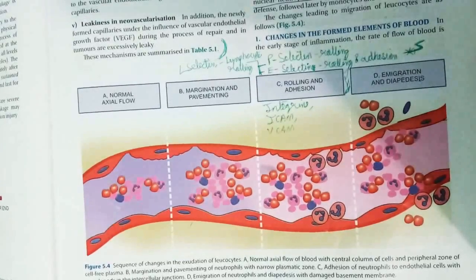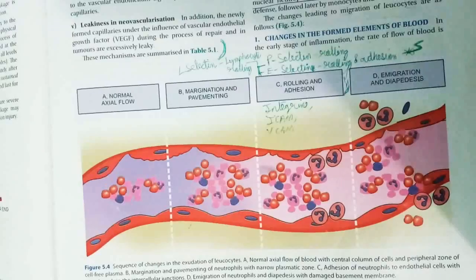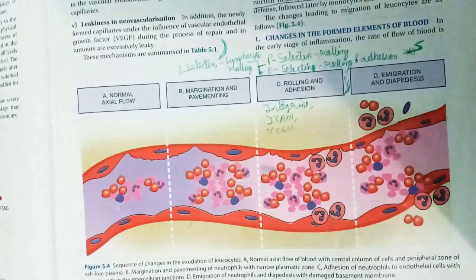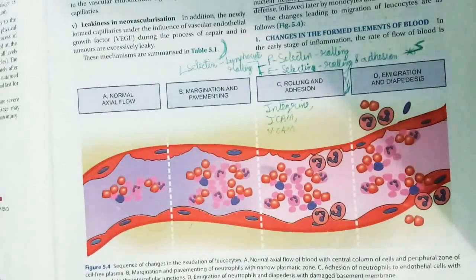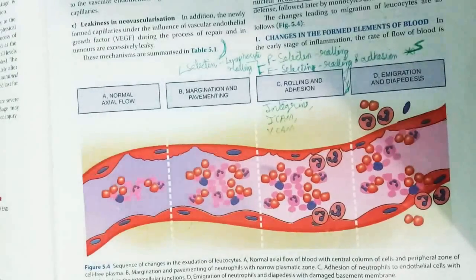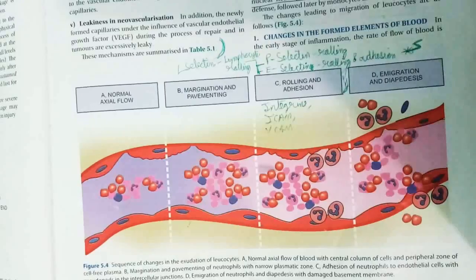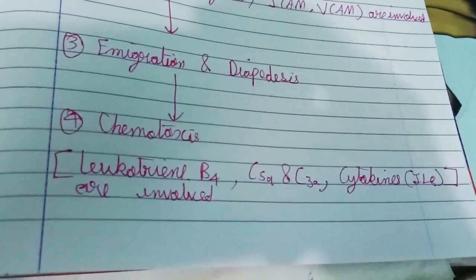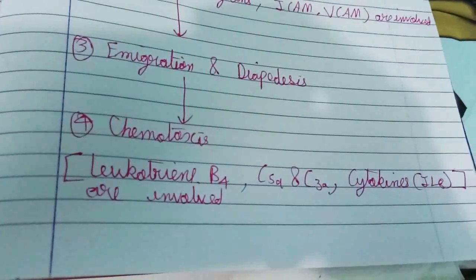After rolling and adhesion, immigration and diapedesis occur. Immigration is the movement of leukocytes out of the blood vessel into the tissue so that normal blood flow can continue. Diapedesis is the movement of RBCs out of the blood vessel, and due to RBCs exiting the vessel, increased redness is observed at that site.